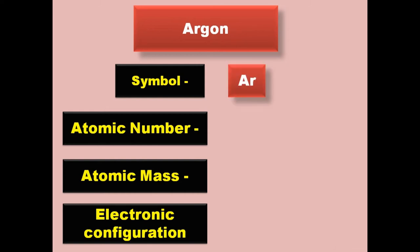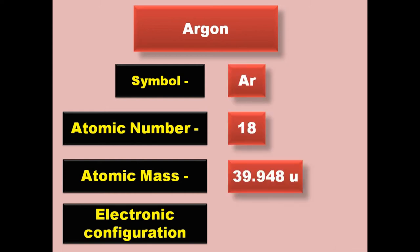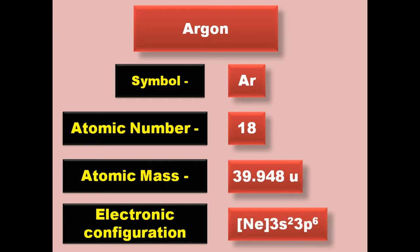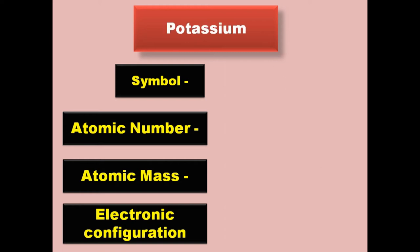Argon has symbol Ar, atomic number 18, atomic mass 39.948, electronic configuration [Ne] 3s2 3p6. Argon is a noble gas and exists in gaseous form at room temperature.